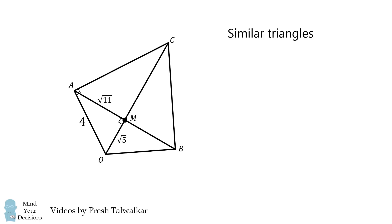From here, we'll use similar triangles. Triangle AOM is similar to triangle COA. Therefore, we have that AO divided by OM, this will be 4 over the square root of 5, is equal to CO divided by OA. Therefore, we can solve for CO, it'll be equal to 16 divided by the square root of 5.